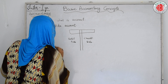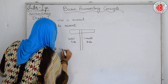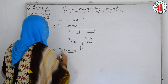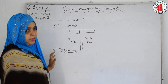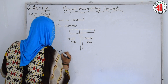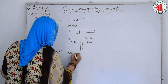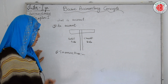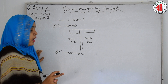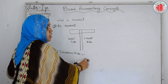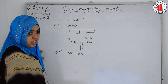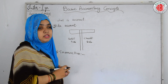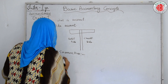The second basic accounting concept is transaction. What is a transaction? As we all know, there are so many day-to-day transactions recorded in a bookkeeping system. A transaction is an event that occurs in a business which changes the financial position of the business. Normally there are two types of transactions: cash transactions and credit transactions.